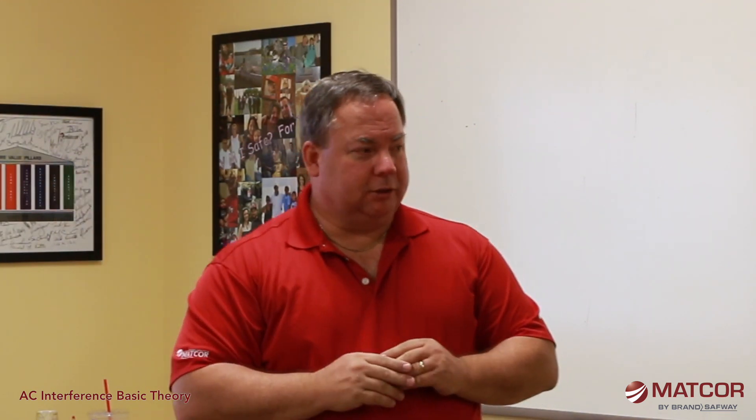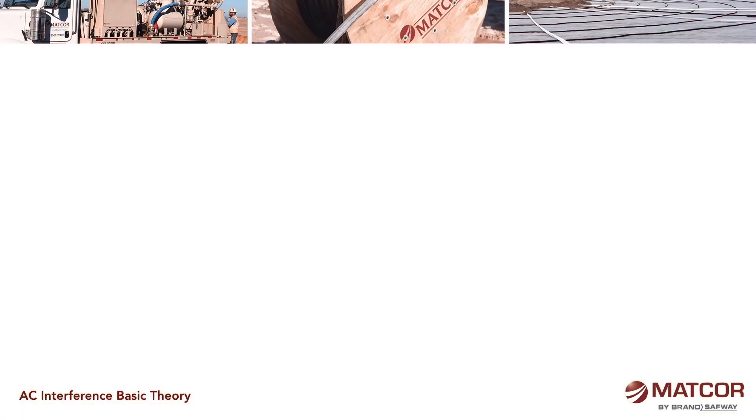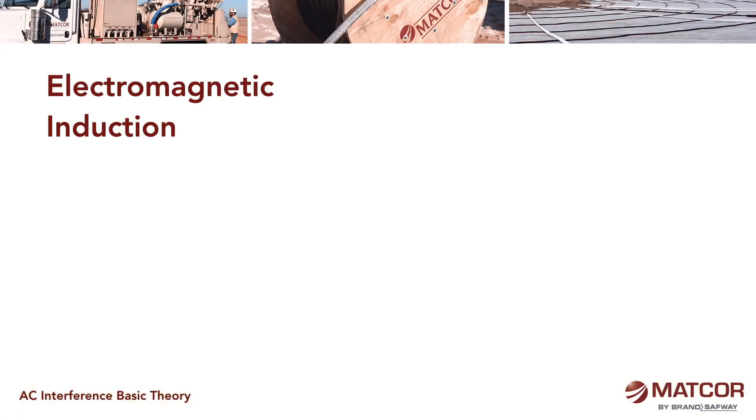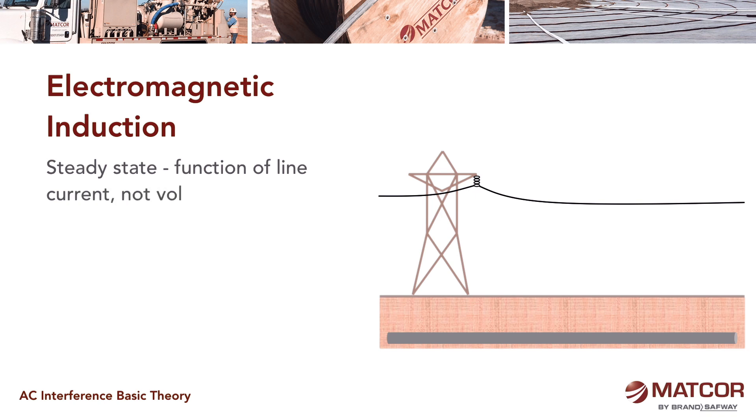The second interaction or interference concern when it comes to pipelines and high voltage lines is electromagnetic induction. Conductive coupling occurs during a fault — it's a rare event, may never happen in your lifetime in the area you're concerned about, or it could. But electromagnetic induction, on the other hand, is pretty much a steady-state thing. If there's current flowing through the line, you're going to have some form of induced current flowing in the pipeline.